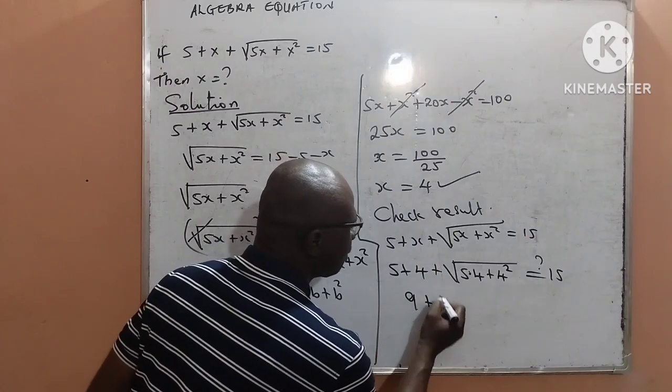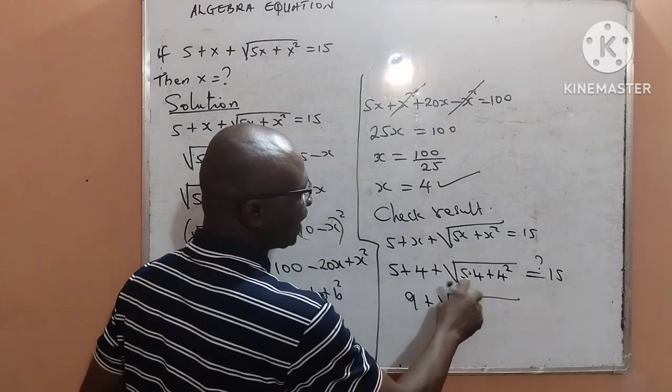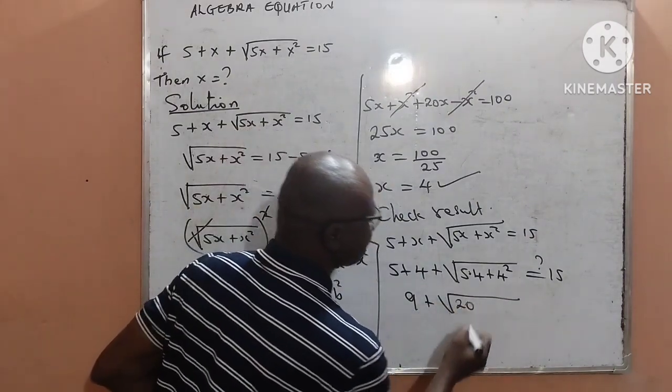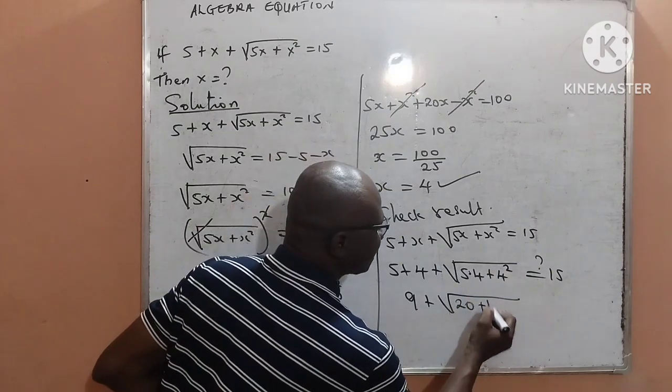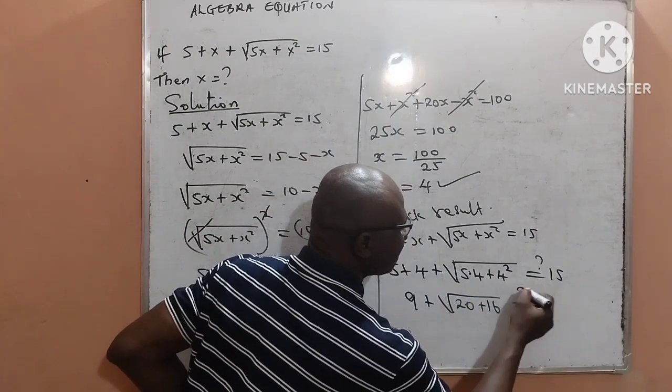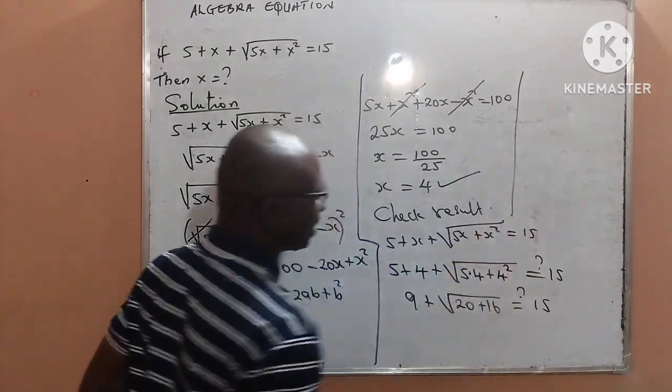Therefore, 5 plus 4 is 9 plus... now 5 multiplied by 4 will give me 20, then 4 squared will give me 16. Can this result to 15? That is what we want to find out.